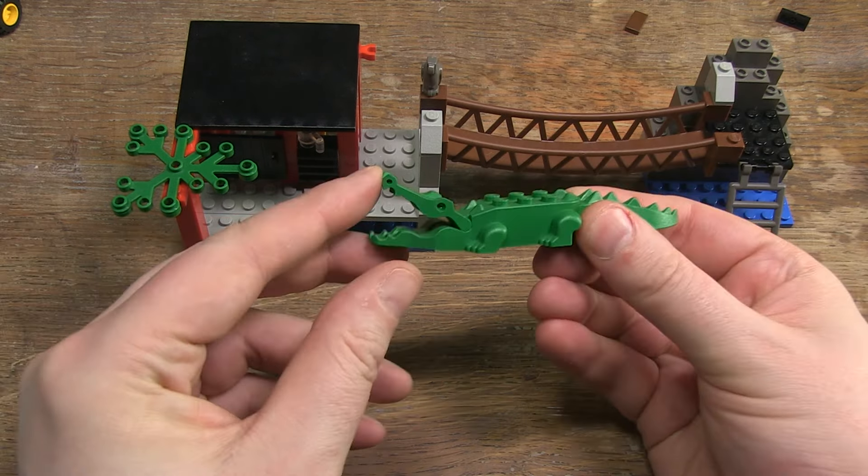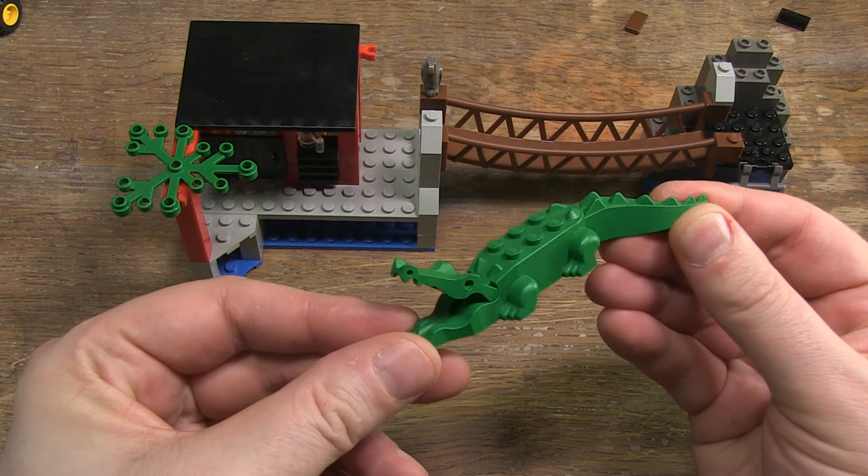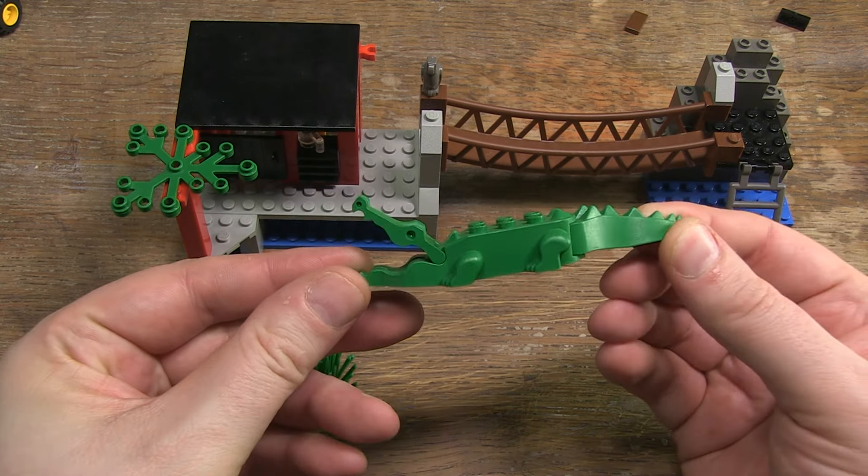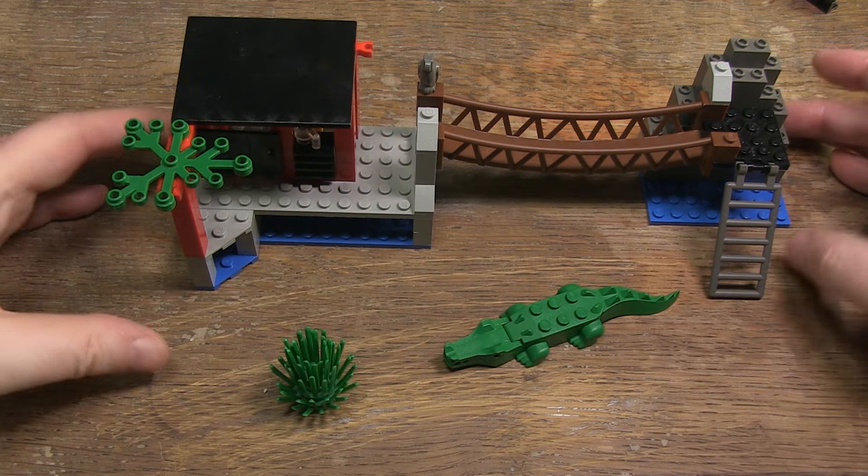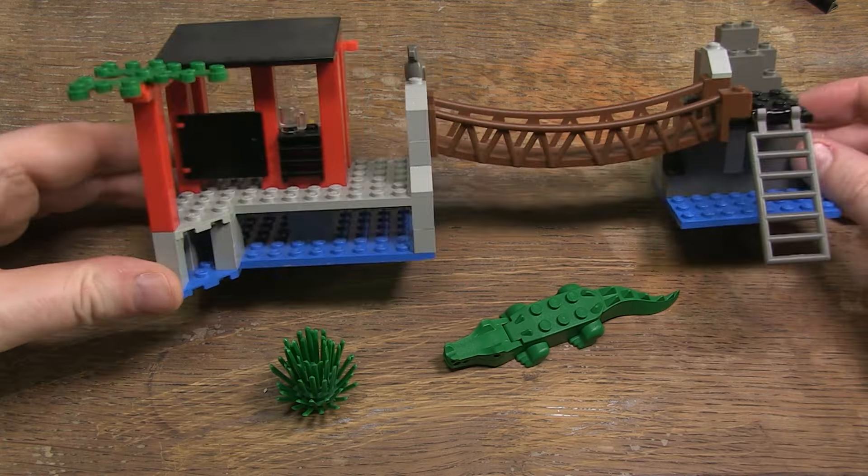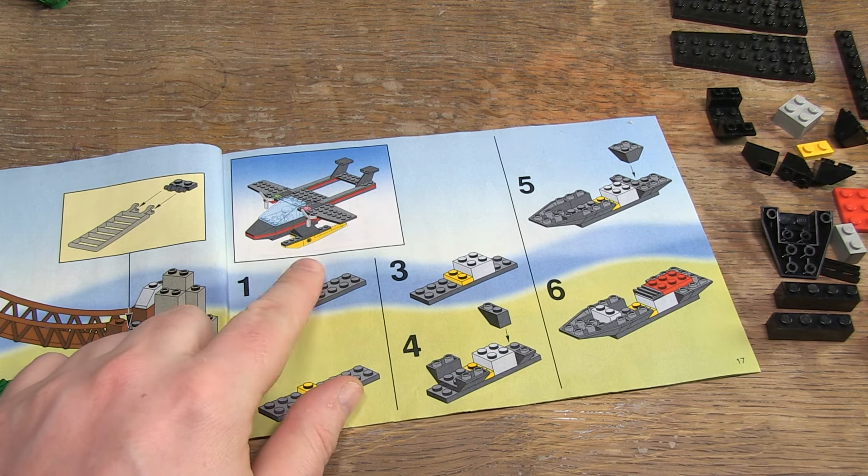To complete the set, there is a gray parrot and a crocodile in the set. The crocodile in particular is a nice added value and the eye-catcher of the set. And given the title of the set, I'm guessing this is supposed to represent an alligator.